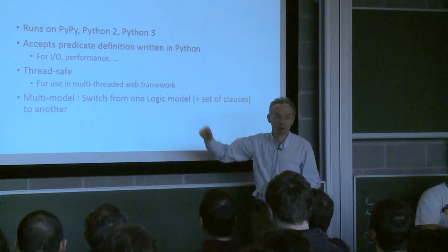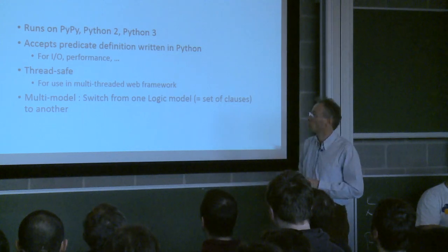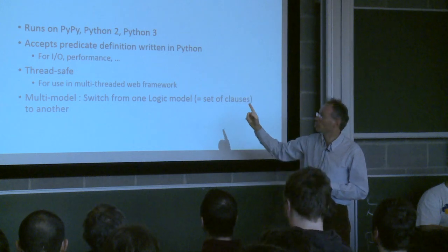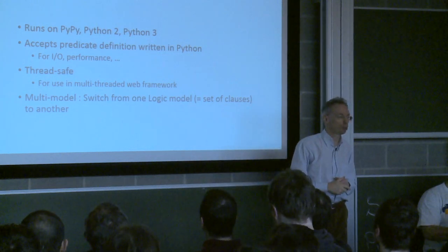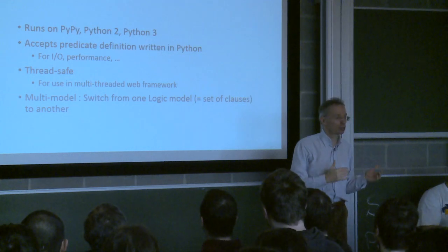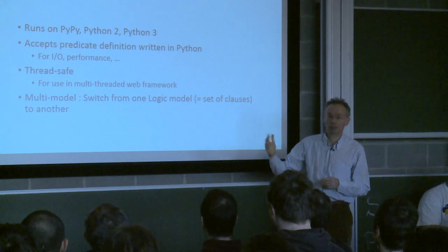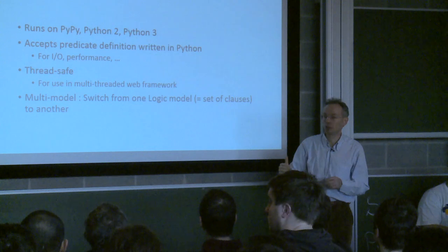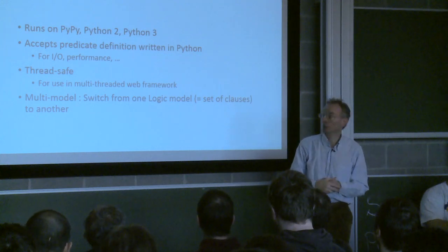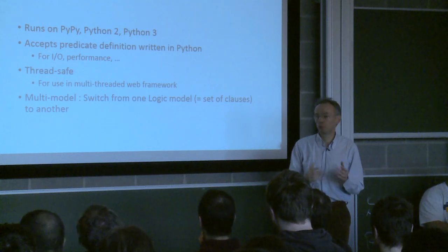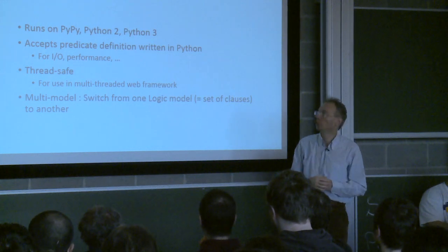So that's already quite a lot of features, but there are some more, like it runs on PyPy, so that it can be compiled and run pretty quickly. It runs also on Python 2.7, I should put 2.7 there, and Python 3. You can define some predicates in pure Python, so that you can really mix logic programming and Python in many different ways. And the advantage of writing some predicates definition in Python is that then you can use that to do some IOs, to read files or whatever. And also for performance reason, you may want at some point to improve the speed of your program by writing things in pure Python.